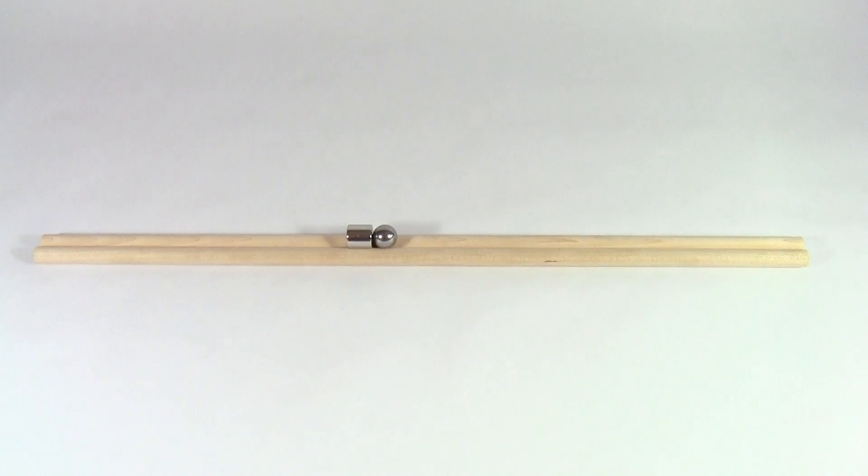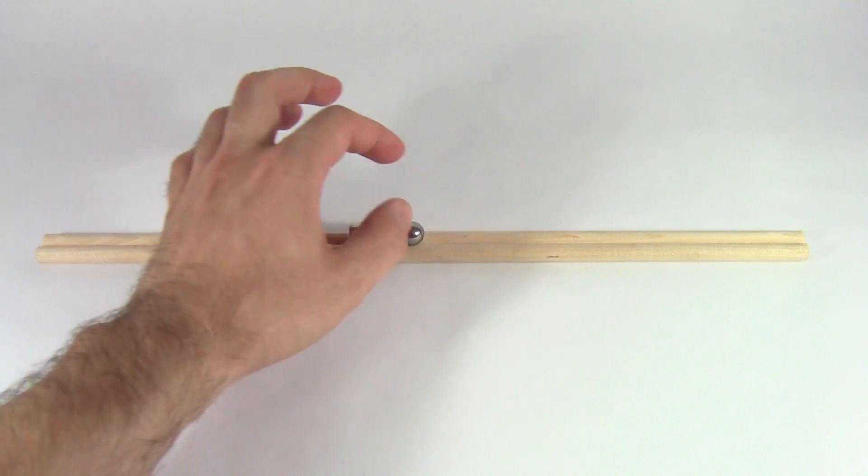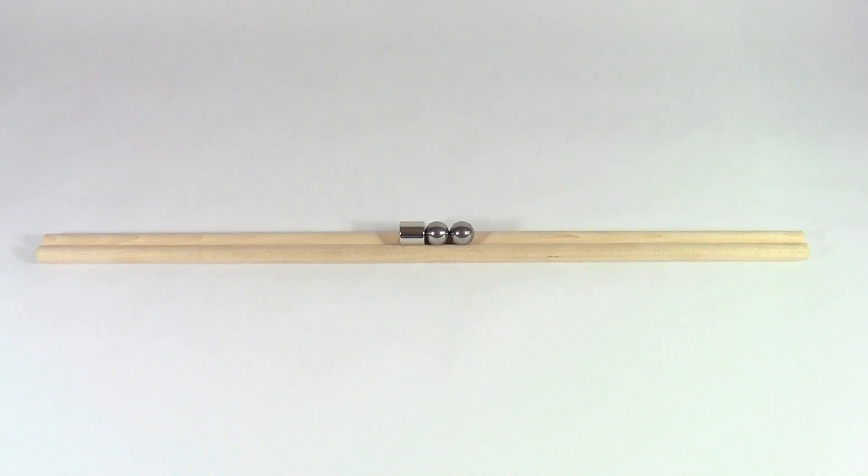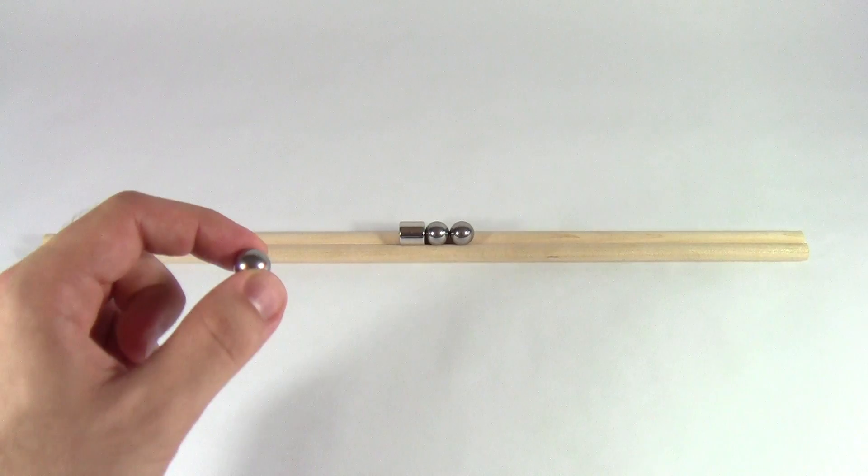Slide two ball bearings up against one side of the magnet. Then, take a third ball bearing and gently roll it against the other side of the magnet.